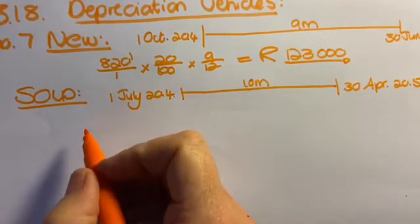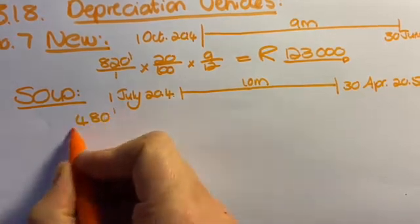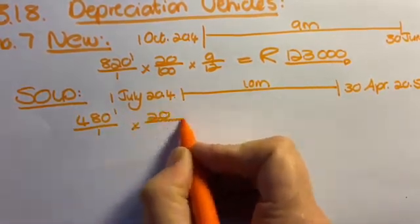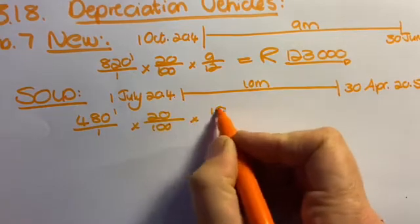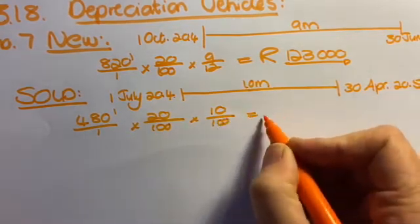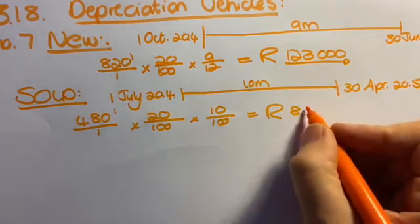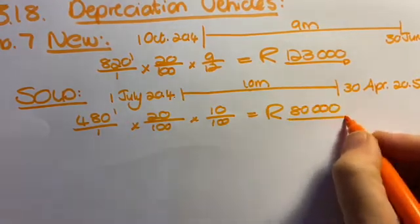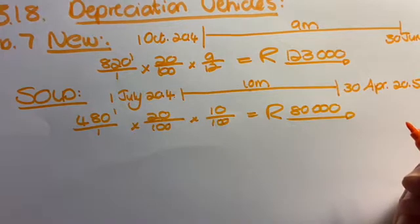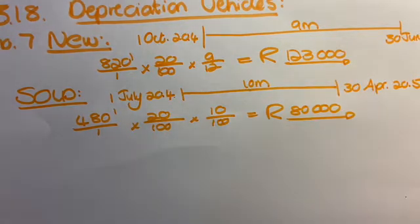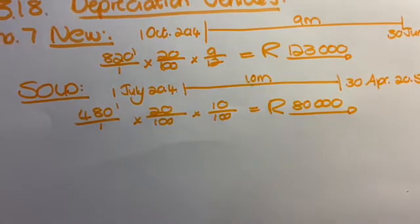What was the cost price of the car? They tell us it was 480. Again, 20%. And you work it out for 10 months. So my depreciation, and this is just a little piece I'm going to add for this year, is 80,000. They did mention that there was some prior depreciation of 72. We'll come back to that later.